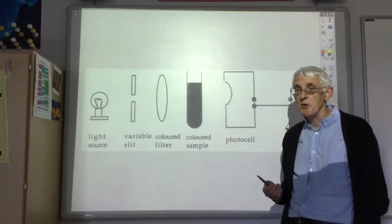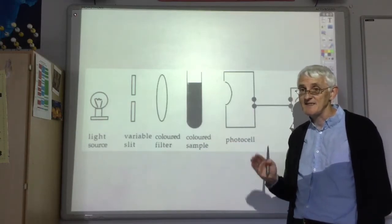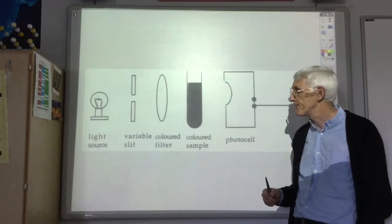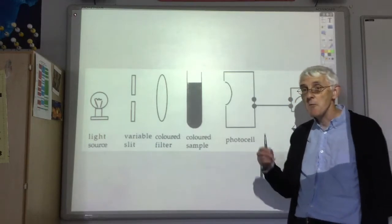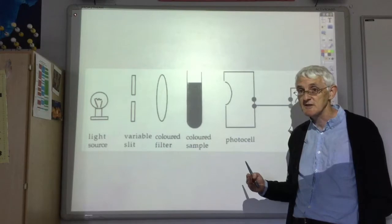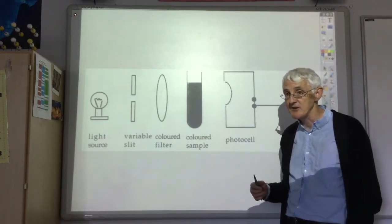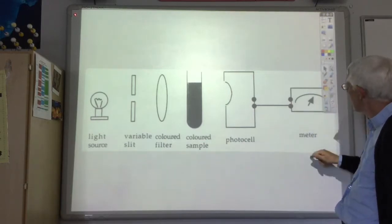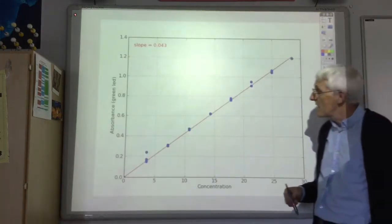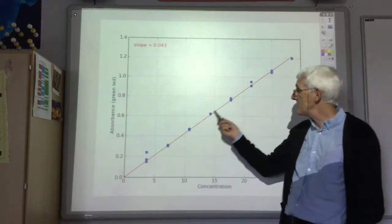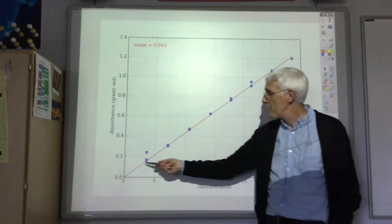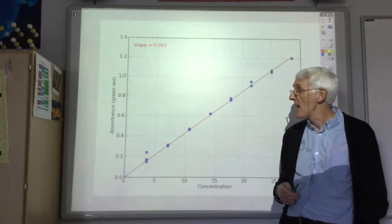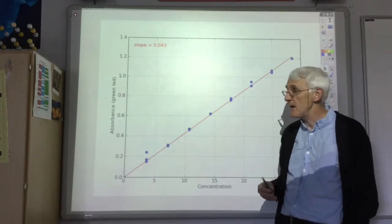So when you're doing colorimetry, what you do is you make up a series of standard solutions of known concentration of permanganate or whatever you're analyzing. You then measure the absorbance for these known concentration solutions and construct a calibration graph. So here are the points collected from our standard solutions. We then draw a best fit straight line through the samples and then we measure the absorbance of our unknown sample.